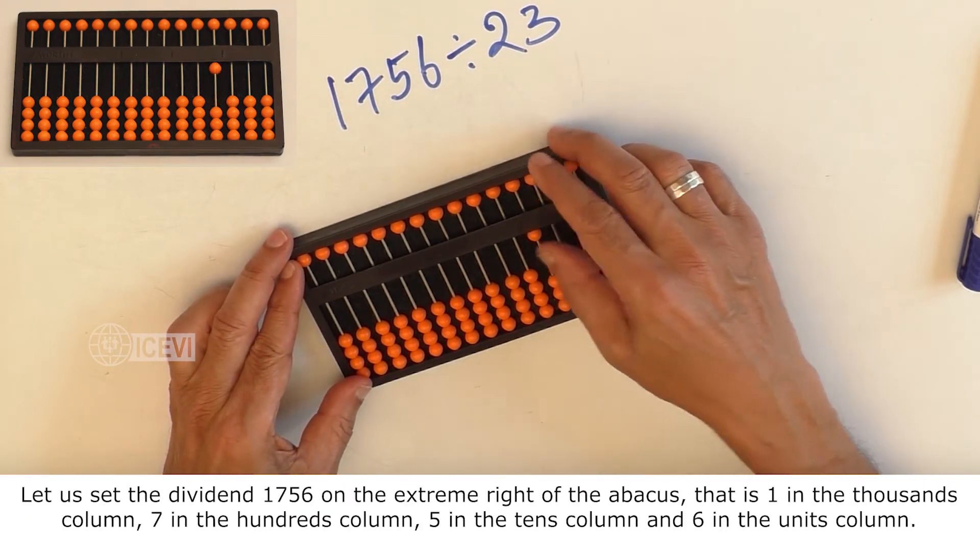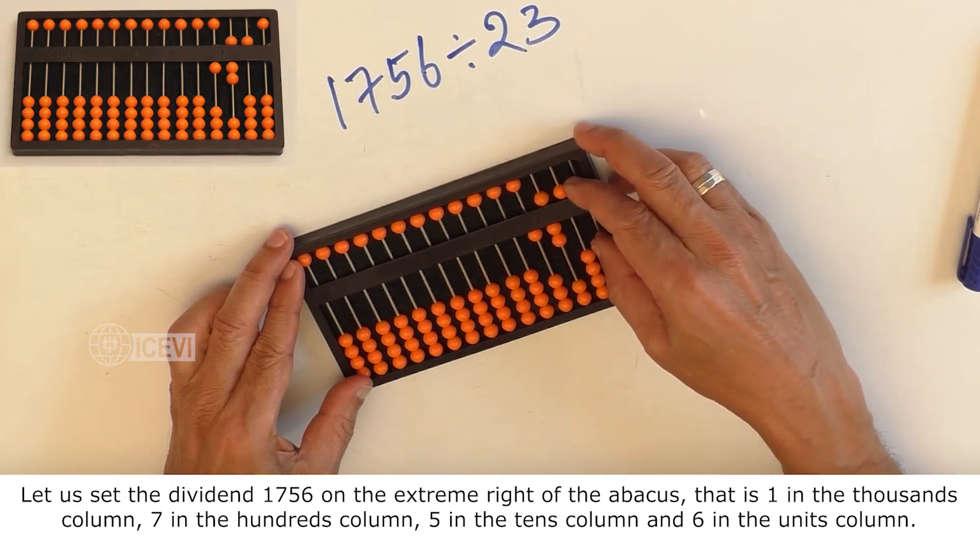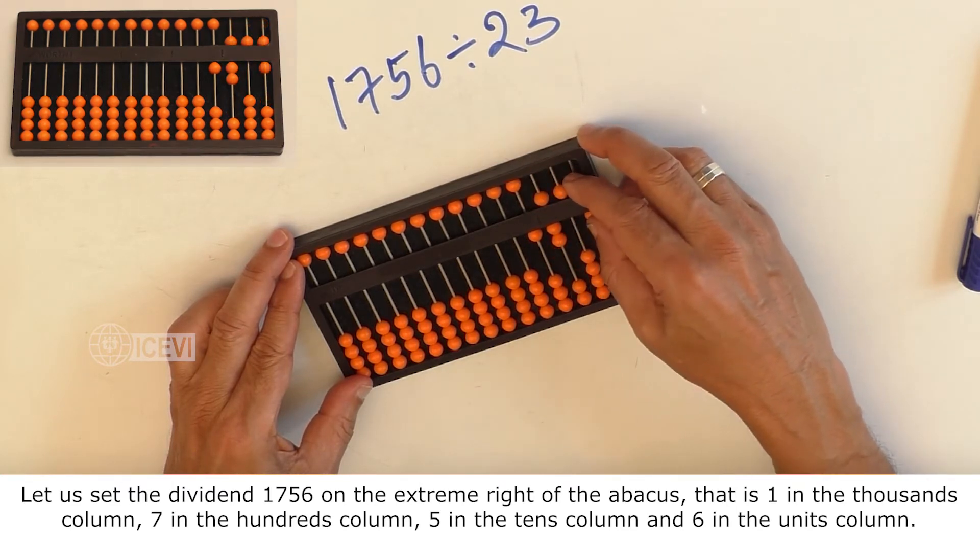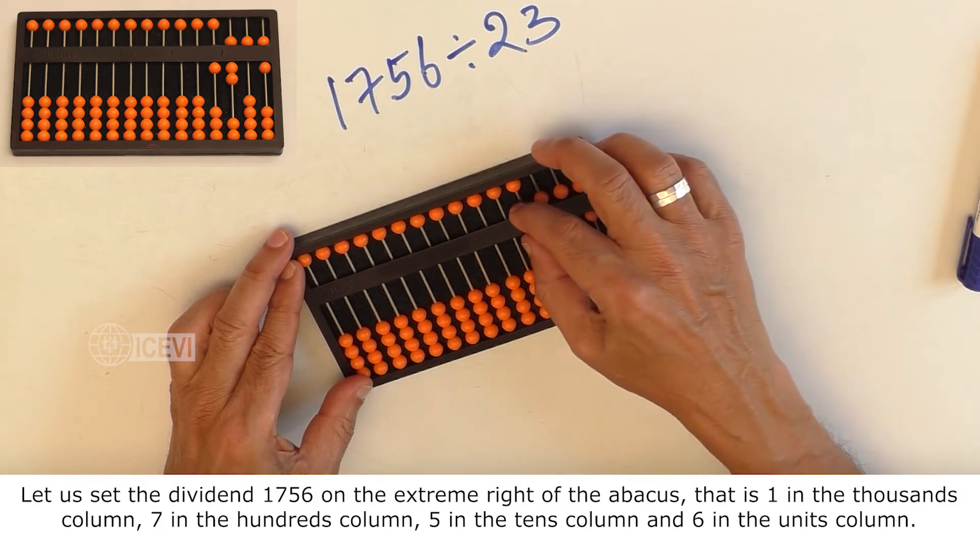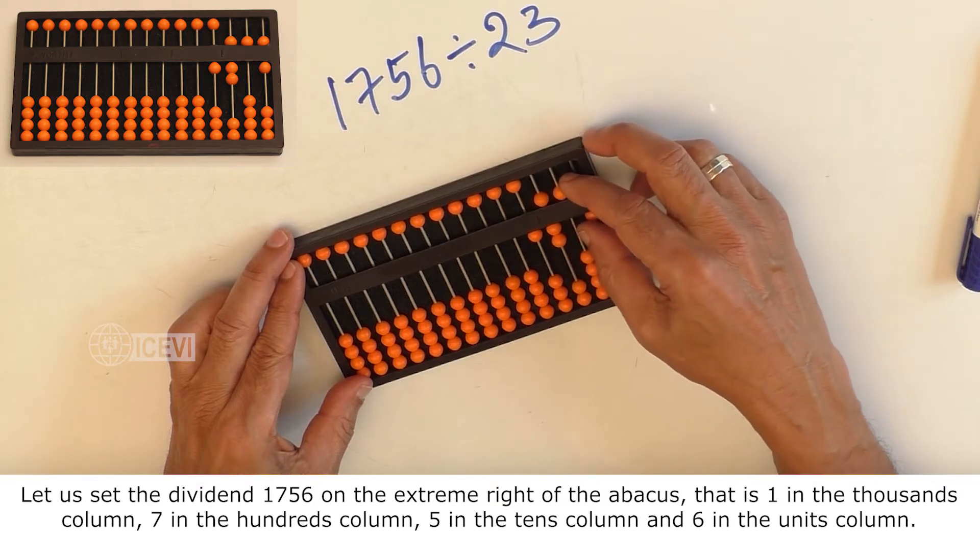Let us set the dividend 1756 in the extreme right of the Abacus. That is 1 in the thousands column, 7 in the hundreds column, 5 in the tens column, and 6 in the units column.